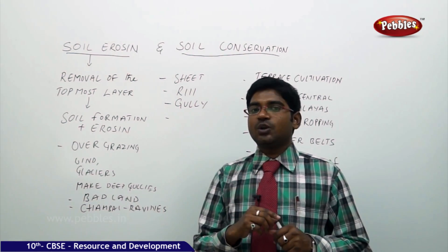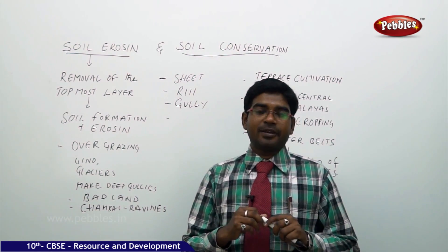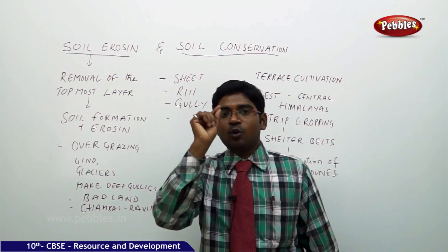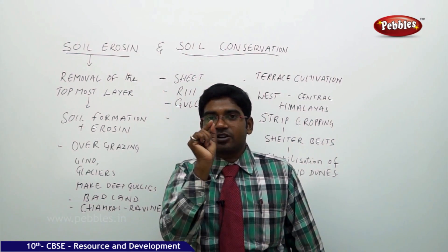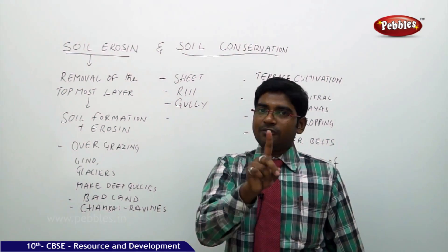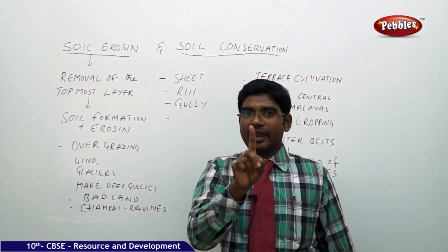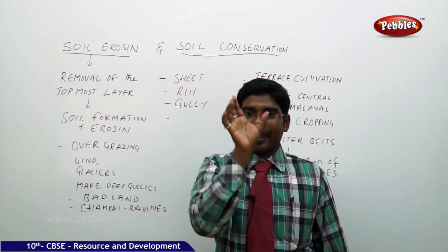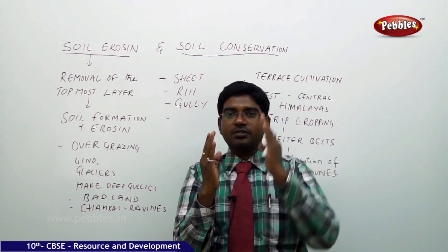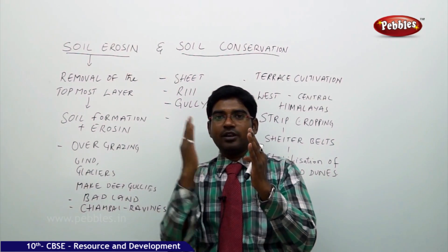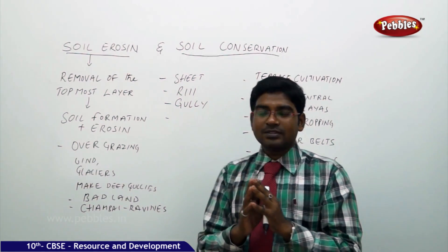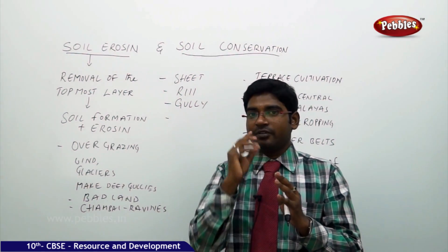Soil formation, as we discussed earlier, takes millions of years to form just one centimeter of soil on land. So soil formation and soil erosion go hand in hand. Soil formation and soil erosion must be balanced; otherwise it results in a very dangerous situation.